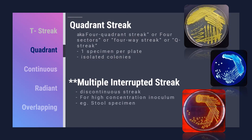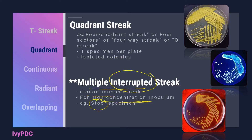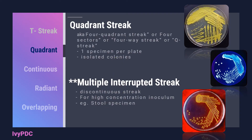A variation of the quadrant streak is called the multiple interrupted streak. As the name implies, the streaking pattern is interrupted or discontinuous. This streaking pattern is usually used for high concentration inoculum like specimens coming from stool. This is the primary streak — the streak is not continuous, they are interrupted. Then the secondary streak, the third streak, and lastly the fourth streak. The objective of this is to have isolated colonies after incubation.